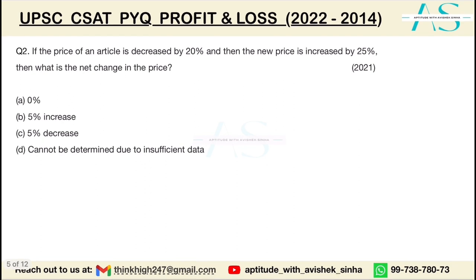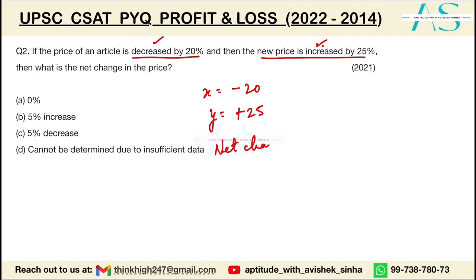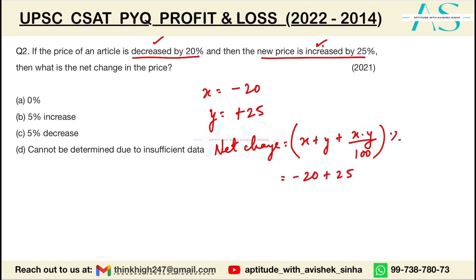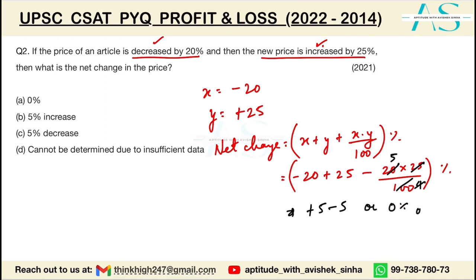Next question: The price of an article is decreased by 20% and the new price is increased by 25%. So x = −20, y = +25. Net change = −20 + 25 + (−20×25)/100 = +5 − 5 = 0 percent, or no change. Option A is the correct answer.